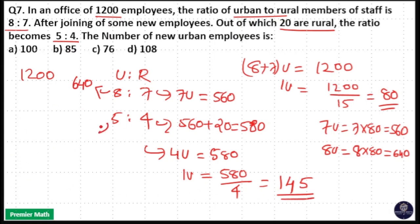That means 5 units in the new ratio is 145 times 5. That is 5 times 5 is 25, 5 times 4 is 20 plus 2 is 22, 5 times 1 is 5 plus 2 is 7. So 725.